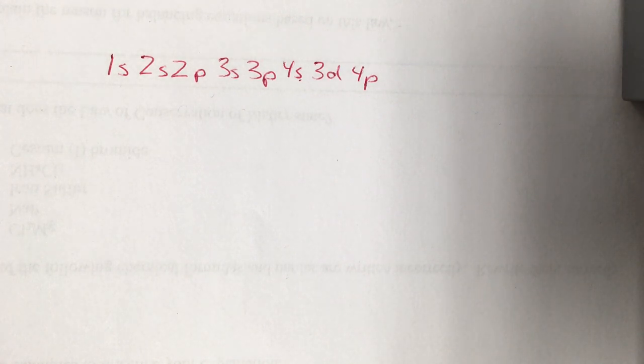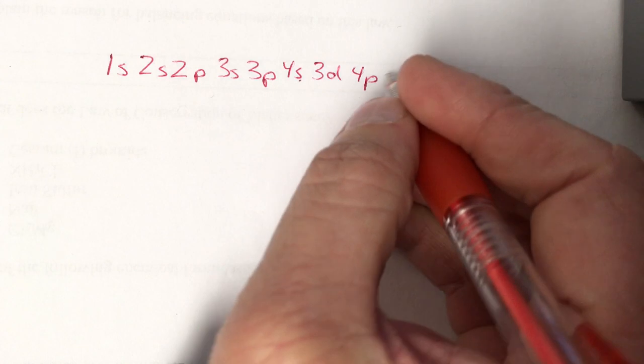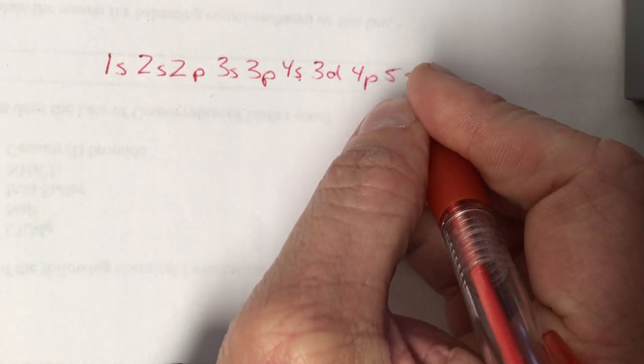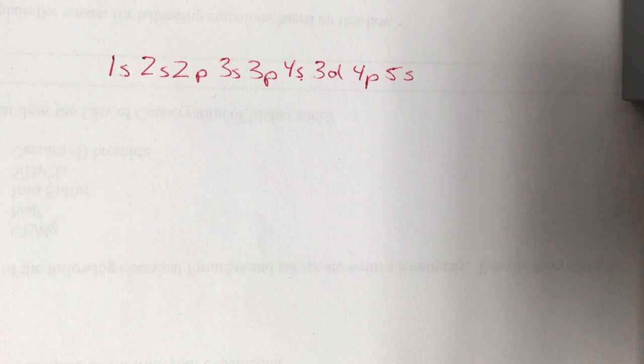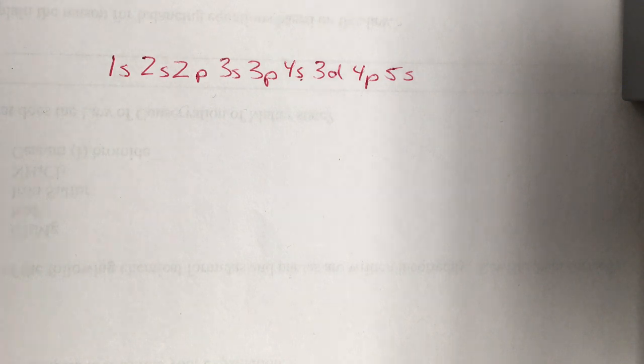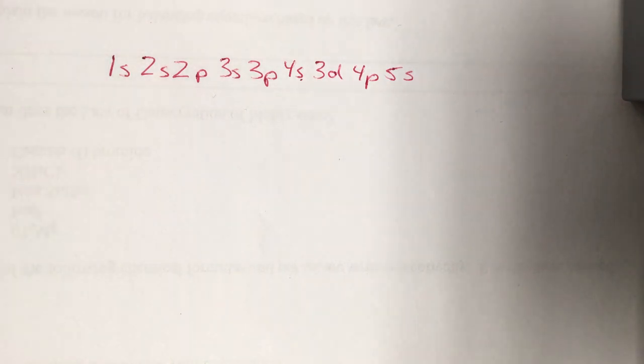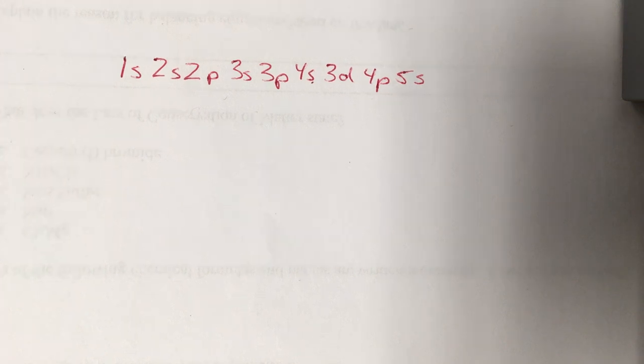And the next one would be 4d, but again the rule is we can't put anything in 4d until we've done 5s. Now according to the standards and what I understand, we can't go beyond atomic number 38, which is strontium. And that's where we'd end right there. 5s would be the last orbital in a strontium atom. So there's really no need to go any further.